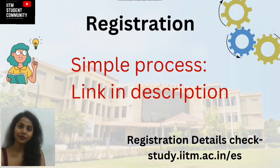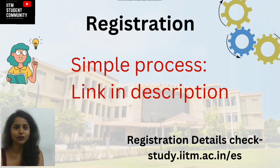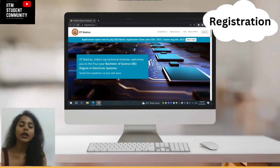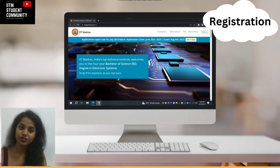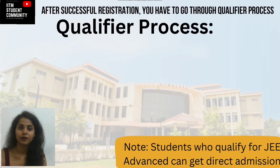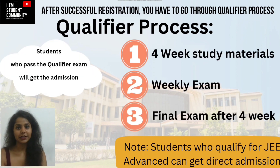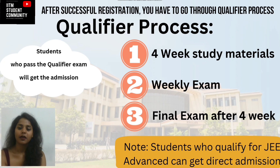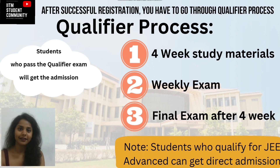The registration process is really simple. There's a link in the description — you just have to click on that and register yourself. Once you click the link, it will take you to a page as shown on your screen. During registration, you just need to keep your educational documents, email ID, and phone number with you. After you successfully register, you go through a qualifier process where you'll be given four weeks, after which you will get admission.